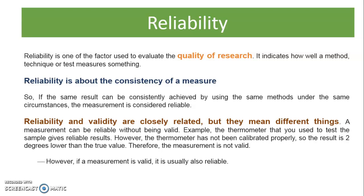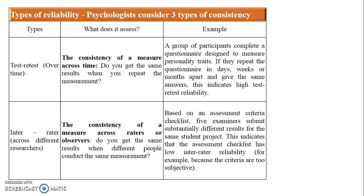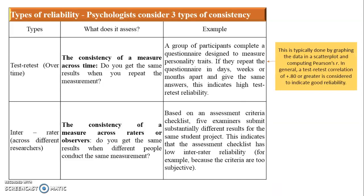There are three types of reliability. The first is test-retest reliability, which is across time — it asks whether you get the same result when you repeat the measurement. For example, if a group of participants completes a questionnaire to measure their personality traits, and when repeated days, weeks, or months apart it still gives the same answers, we say it has high test-retest reliability. You can check this using a scatter plot and Pearson's r, and a value of +0.80 or greater indicates good reliability.